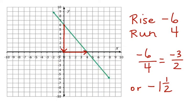We can say that the slope is negative 3 halves, or negative 1 and 1 half. Look at the direction of the line. You can see that the line moves from left to right. This is a negative slope.